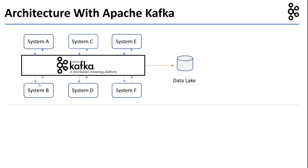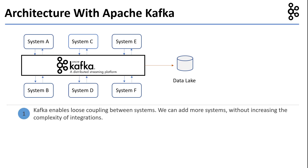Similarly, system B puts its data into Kafka and any other system requiring the data consumes it from Kafka. So how does Kafka reduce the limitations of our traditional architectures? Kafka enables loose coupling between systems. We can add more systems without increasing the complexity of integrations.